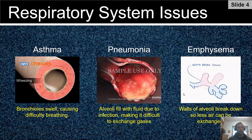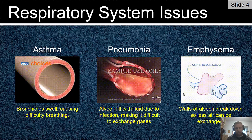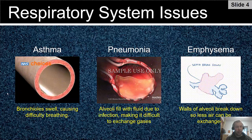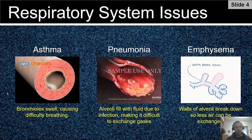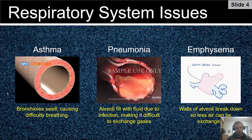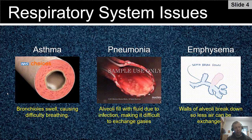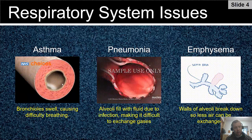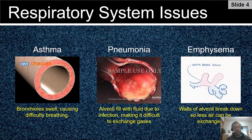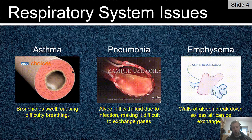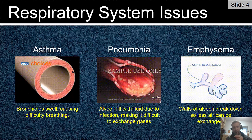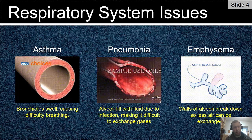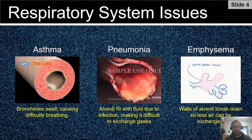Let's talk about some respiratory system issues — there are three to go through. The first is asthma, a pretty common one. What happens in asthma is you get swelling in the bronchioles — those branches that go out to the alveoli. If there's swelling, there's less space for air to go through. People with asthma often say it feels like breathing through a straw. Medicines, like inhalers, often target the swelling to keep the bronchioles from swelling.